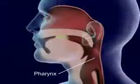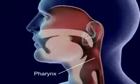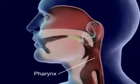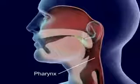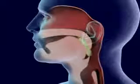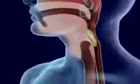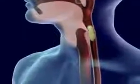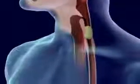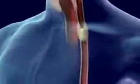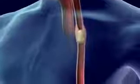Food is forced back into the throat, or pharynx, by the tongue. Food in the pharynx stimulates the swallowing reflex. The larynx is pulled upward to meet the epiglottis and seal off the trachea. Food then goes from the pharynx to the esophagus.